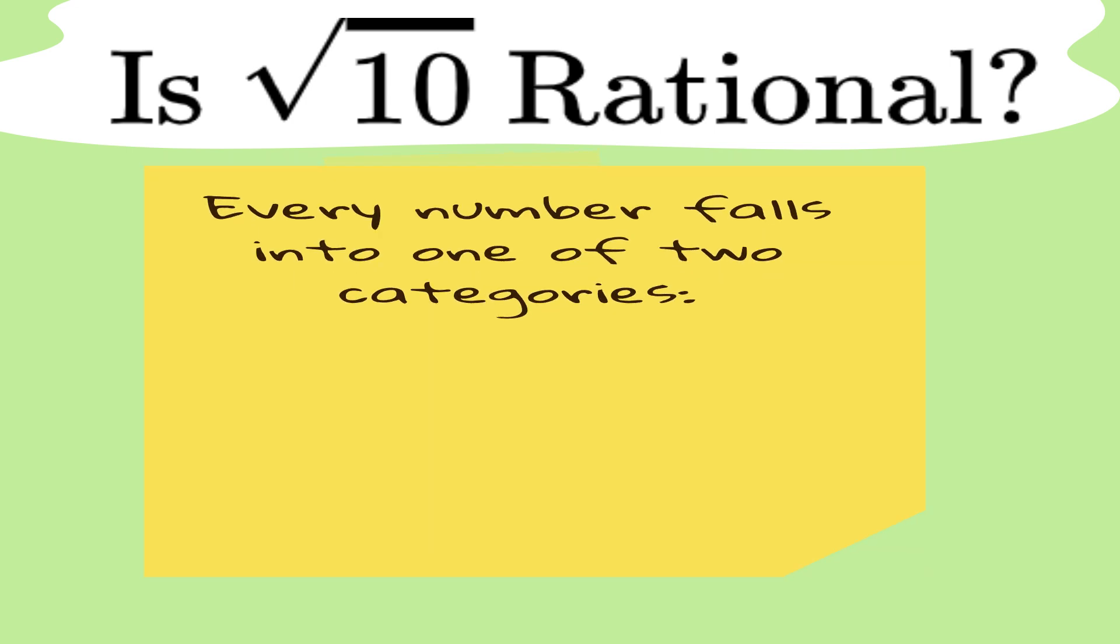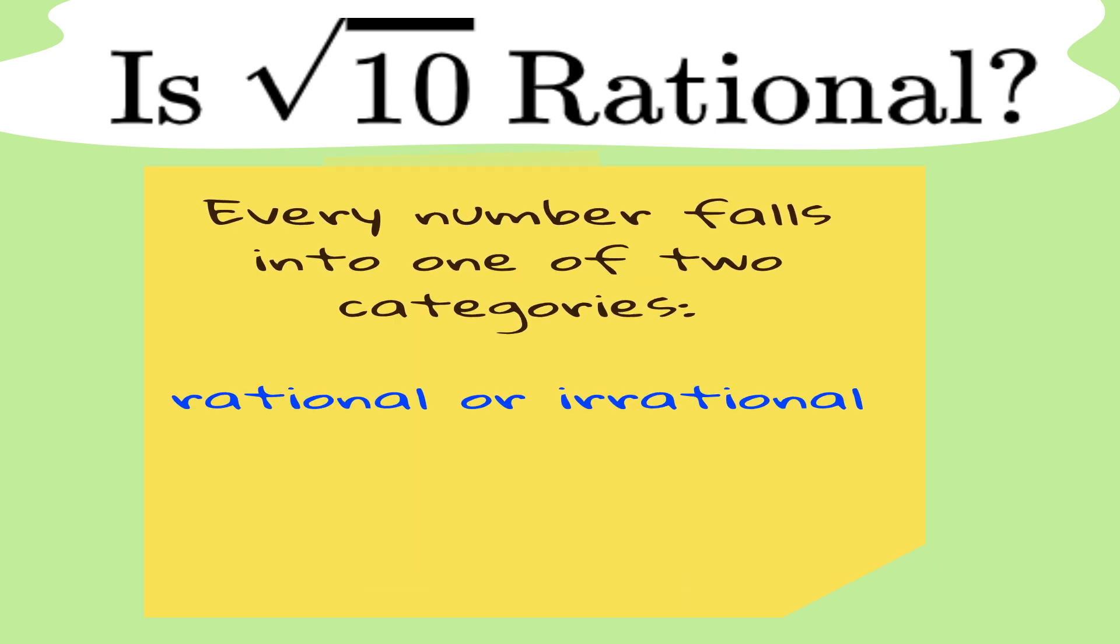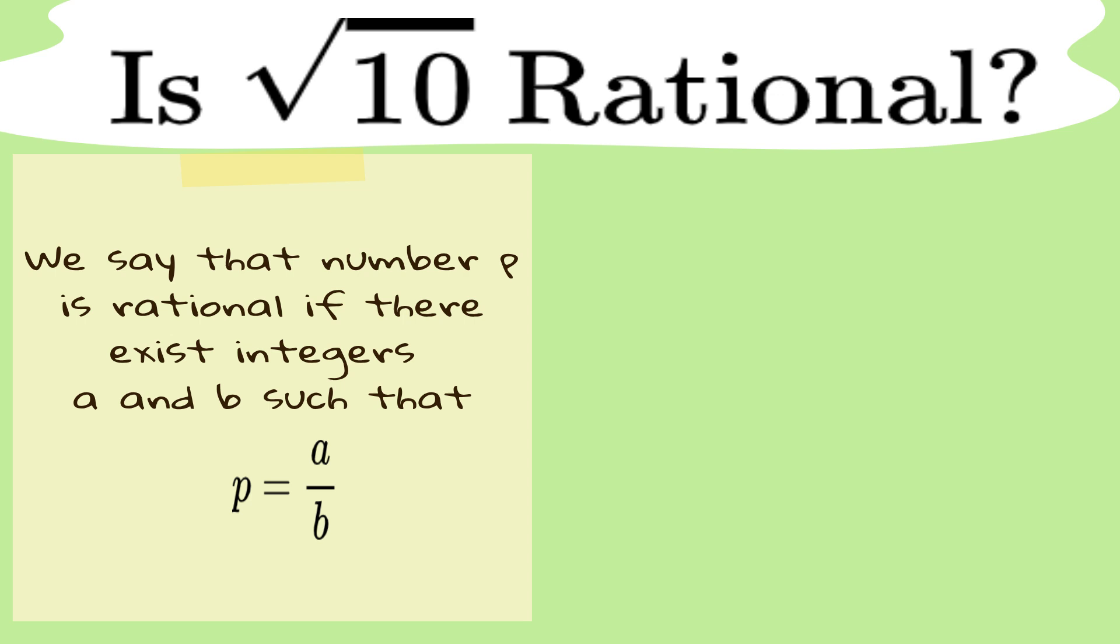Every number falls into one of two groups, rational or irrational. Rational numbers play by the rules. They're tidy, predictable, and can always be written as a fraction, a over b, where both a and b are integers.